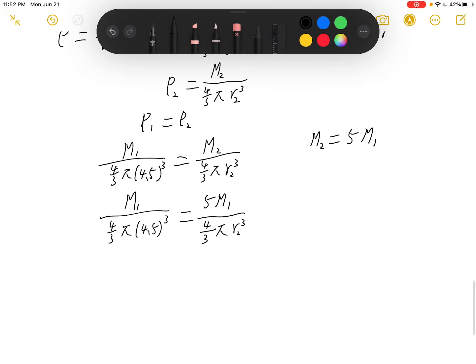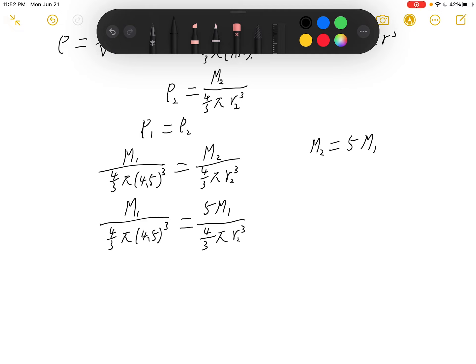And then we can cancel the common factors out. So we would have 1 over 4.5 cubed equals 5 over r2 cubed.